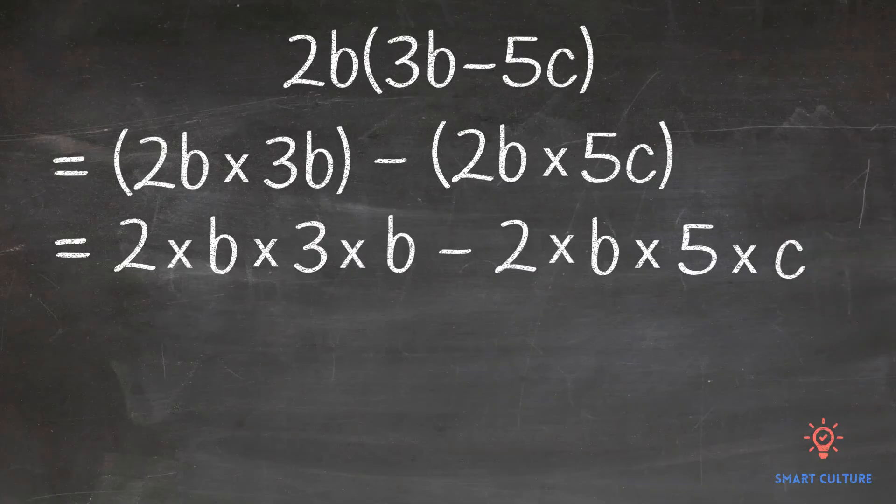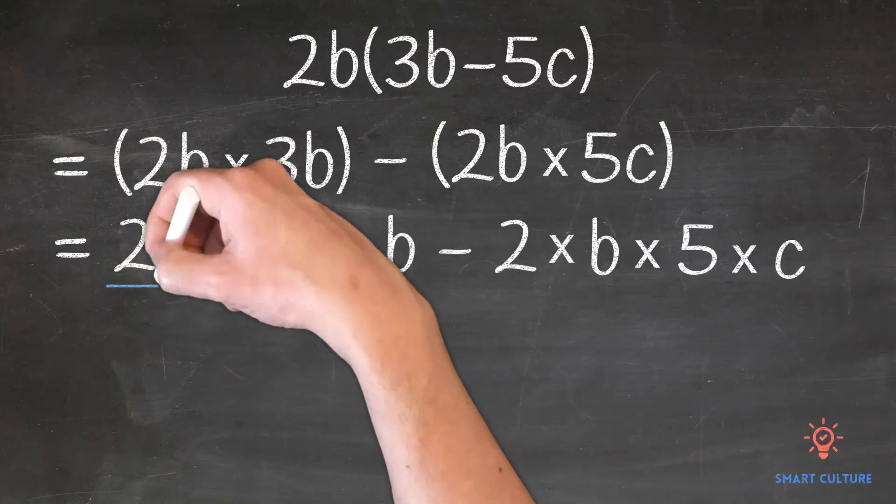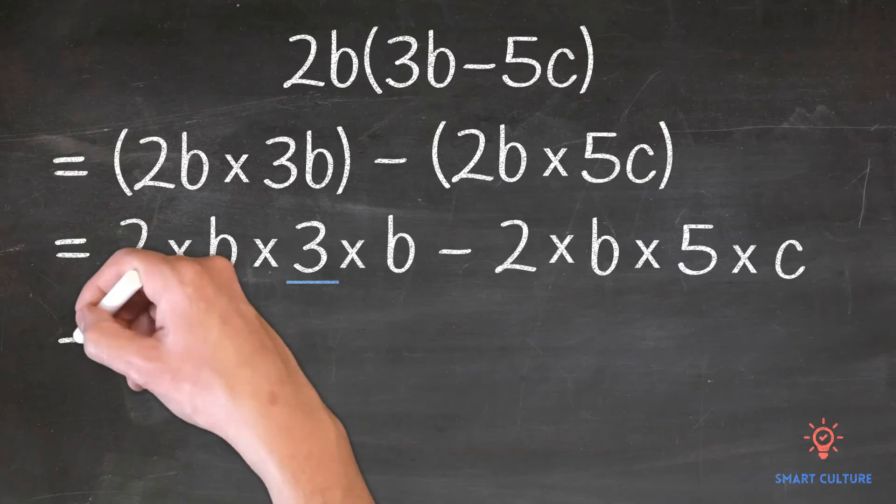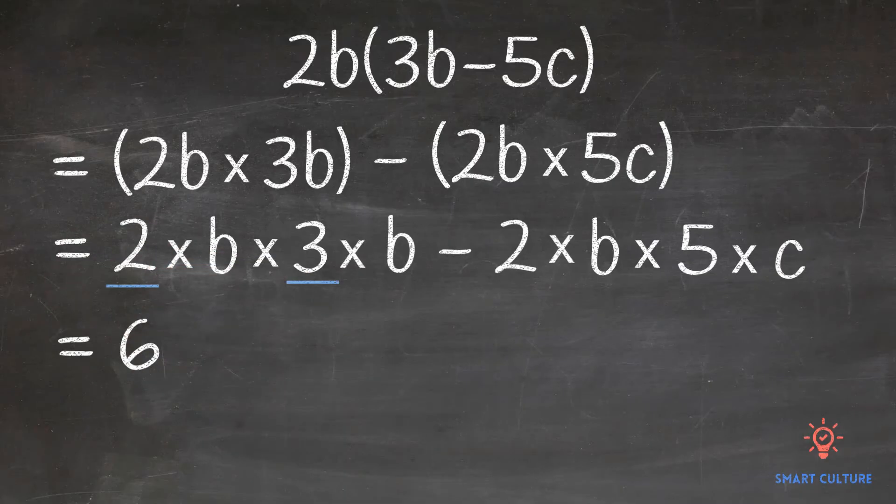Take a look at the coefficients. So first we'll multiply the numerical coefficients. 2 times 3 equals 6. Then we'll multiply the variables. b times b is equal to b squared.